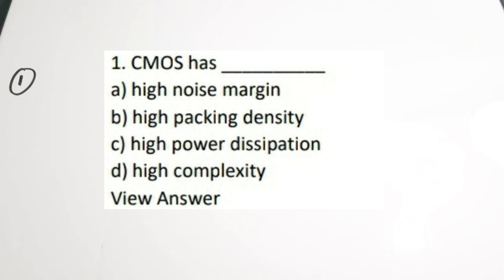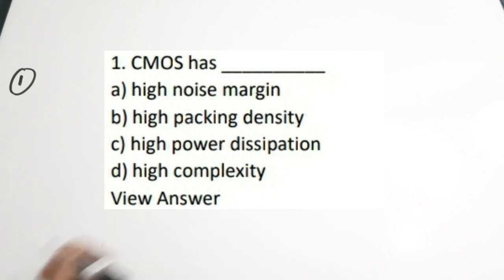The first question is: CMOS has dash. It is actually asking about the properties of CMOS technology. CMOS is Complementary Metal Oxide Semiconductor. The options are: A - High noise margin, B - High packaging density, C - High power dissipation, D - High complexity. It is actually having high packaging density.